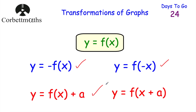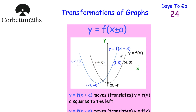Finally, if you've got plus a inside the brackets — y equals f of x plus a — that translates it a squares to the left. It's counterintuitive: rather than moving to the right, it moves to the left. For example, with our graph in black, y equals f of x plus 3 translates it three squares to the left. So 4, 0 goes to 1, 0; minus 4, 0 goes to minus 7, 0; and 0, negative 4 goes to minus 3, negative 4. And that's it for our four transformations.